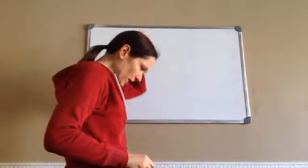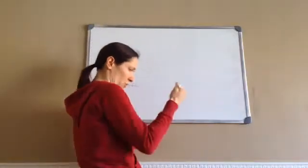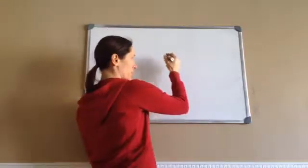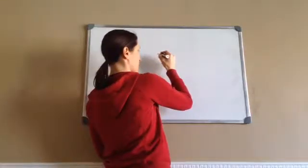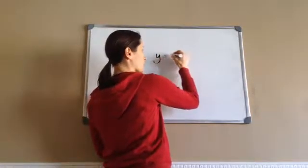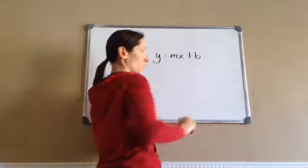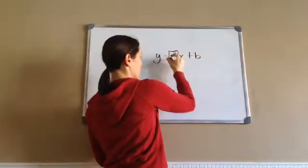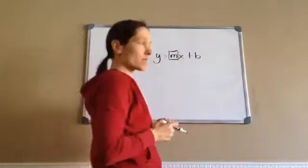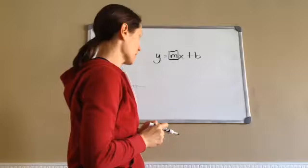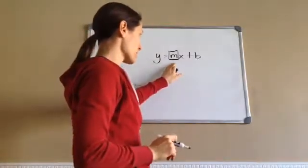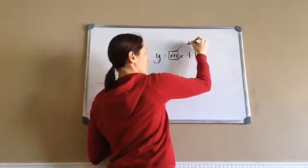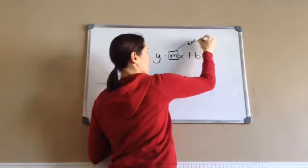Now, first thing I want you to understand is slope-intercept form. This is so important, you're going to need to know what slope-intercept form is. The formula for slope-intercept is y equals mx plus b. The m defines the slope. You need to write that. The m defines the slope.